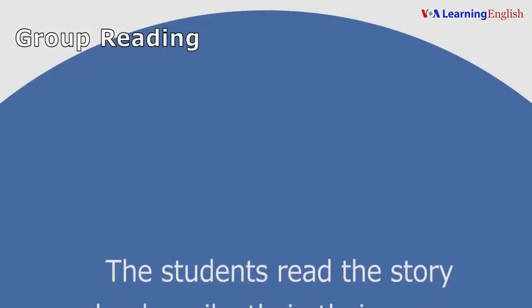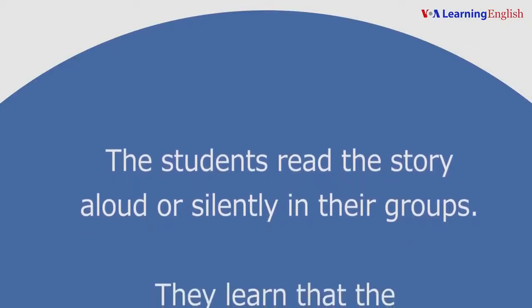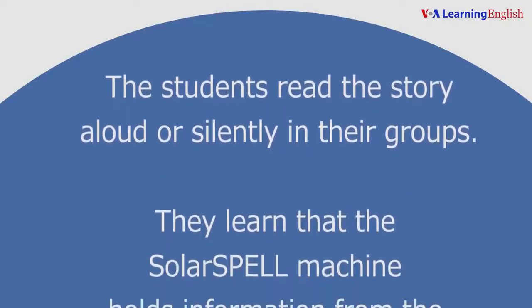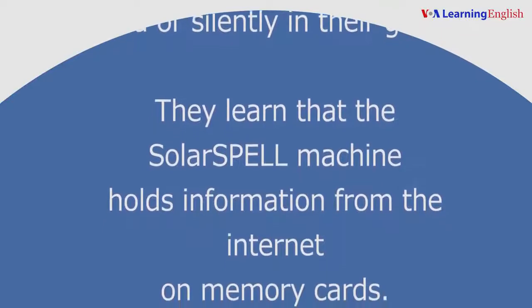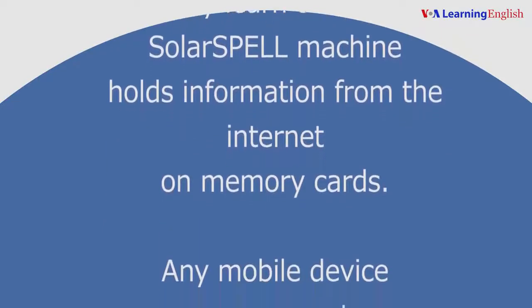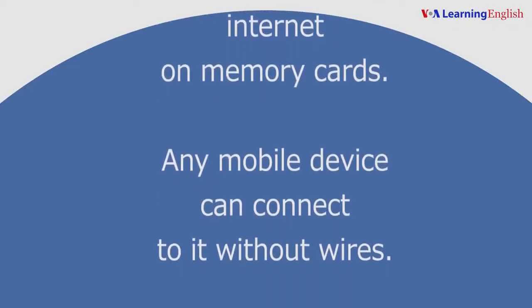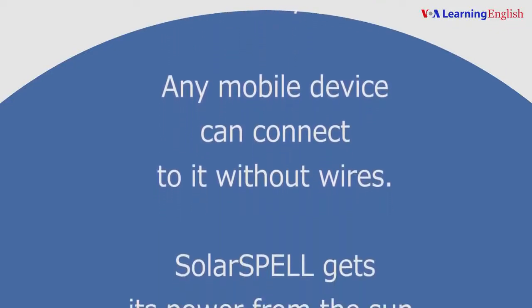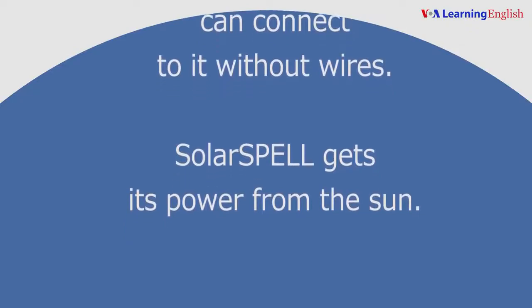The students read the story aloud or silently in their groups. They learn that the SolarSPELL machine holds information from the internet on memory cards. Any mobile device can connect to it without wires. SolarSPELL gets its power from the sun.